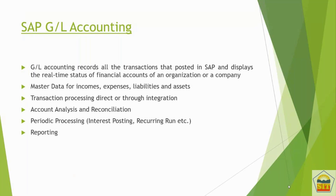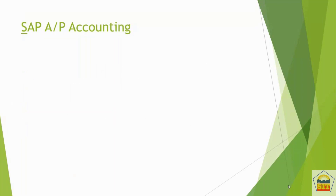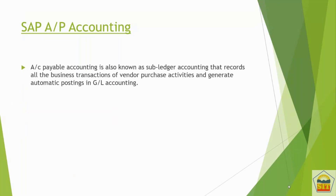Once you have the data in the system, you pull it out for internal and external reporting. That is what we do in General Ledger Accounting. After that we have Accounts Payable Accounting, which is a subset of General Ledger Accounting. Here we create supplier accounts and handle all activities related to your supplier.